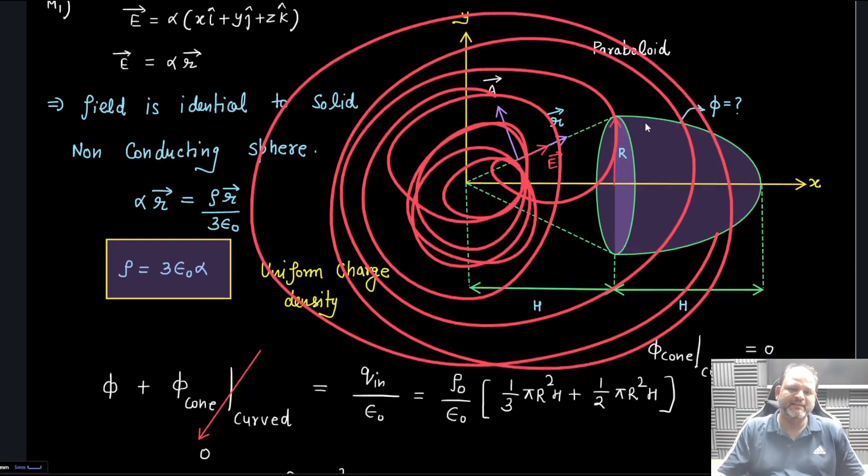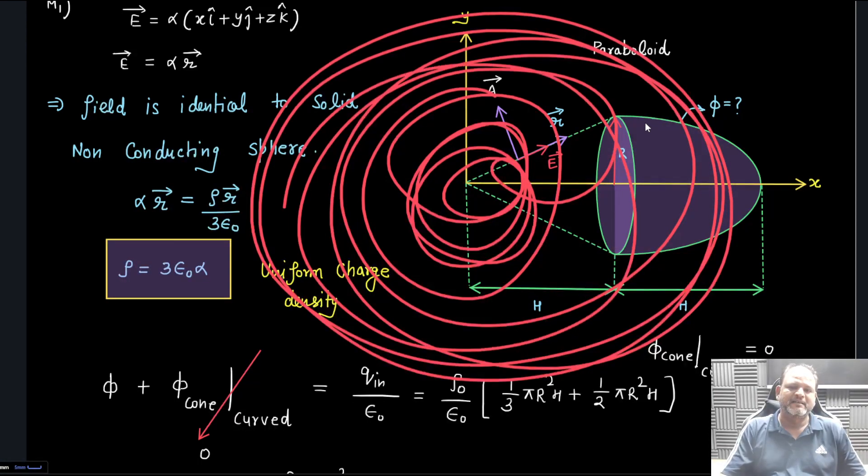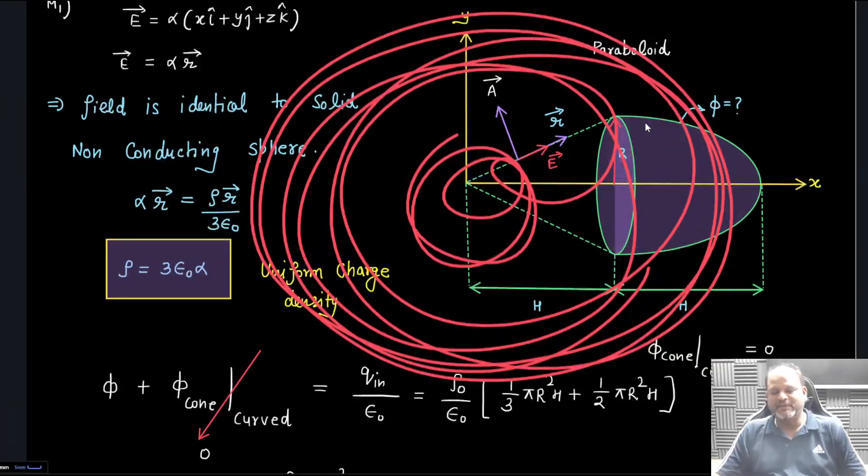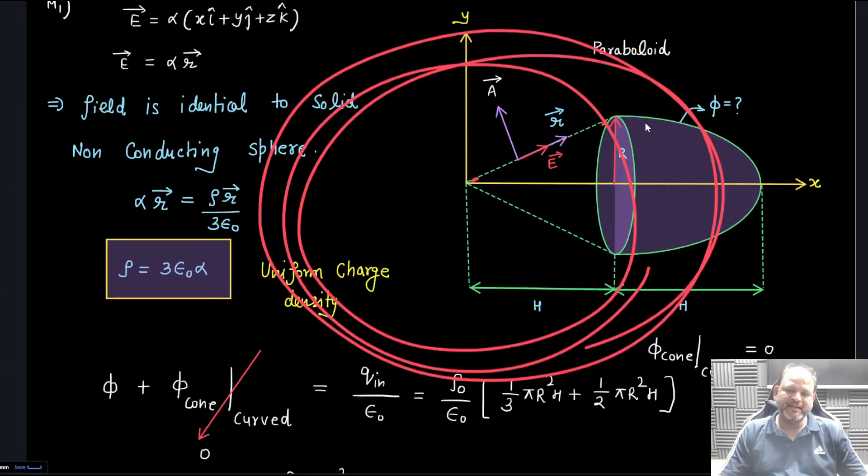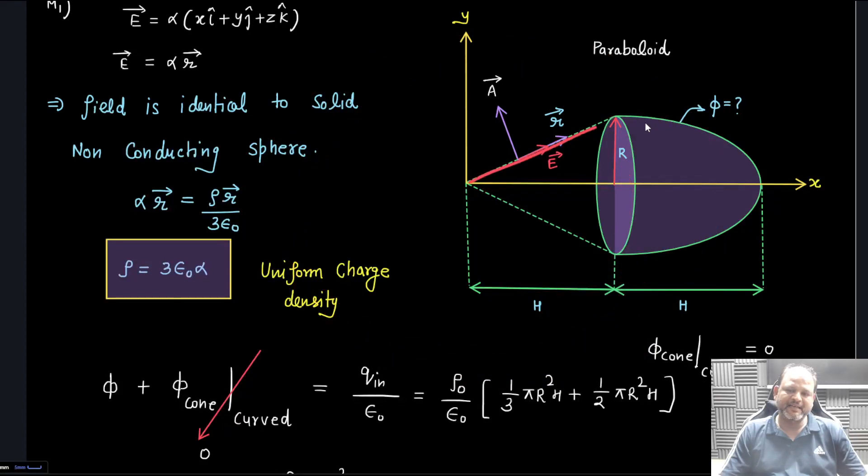This cone surface, if we draw this cone smartly, then I can say directly area vector and these are perpendicular, so through this part there will not be any flux. I can directly say flux through this curved surface of cone and flux through this paraboloid - this sum has to be charge inside by ε₀.